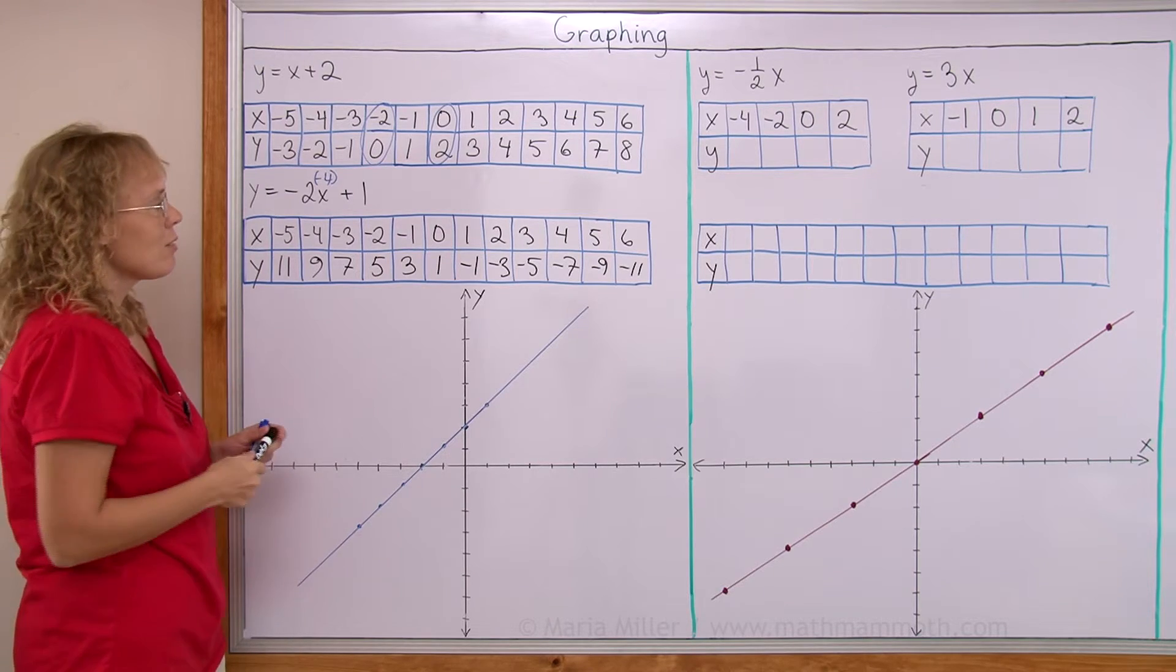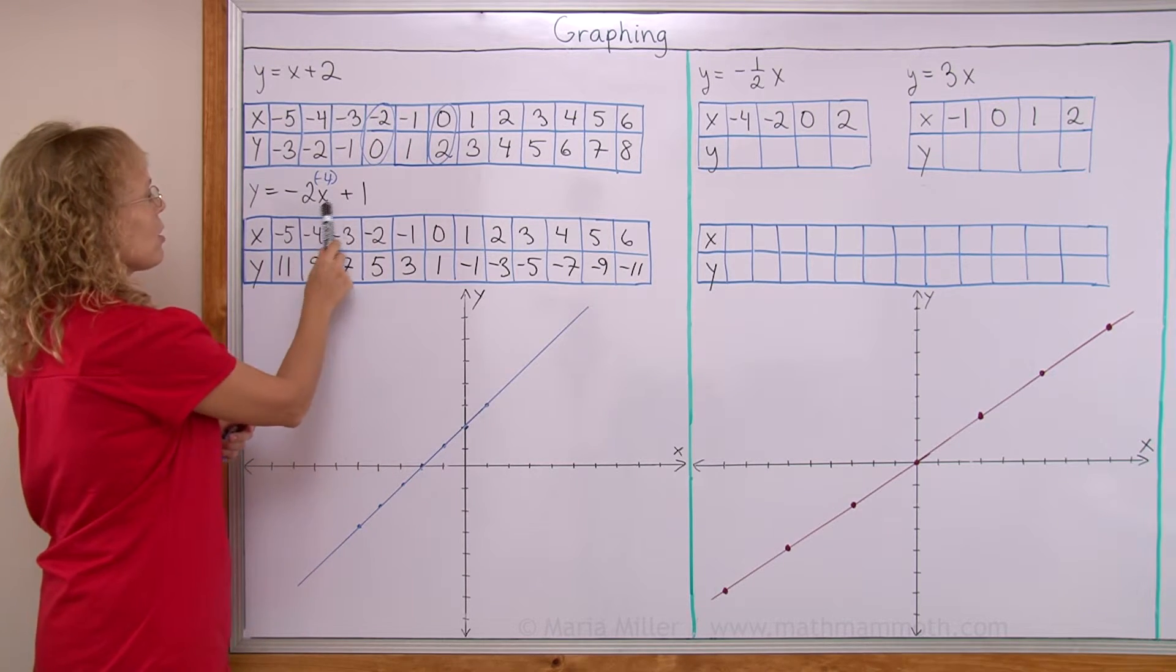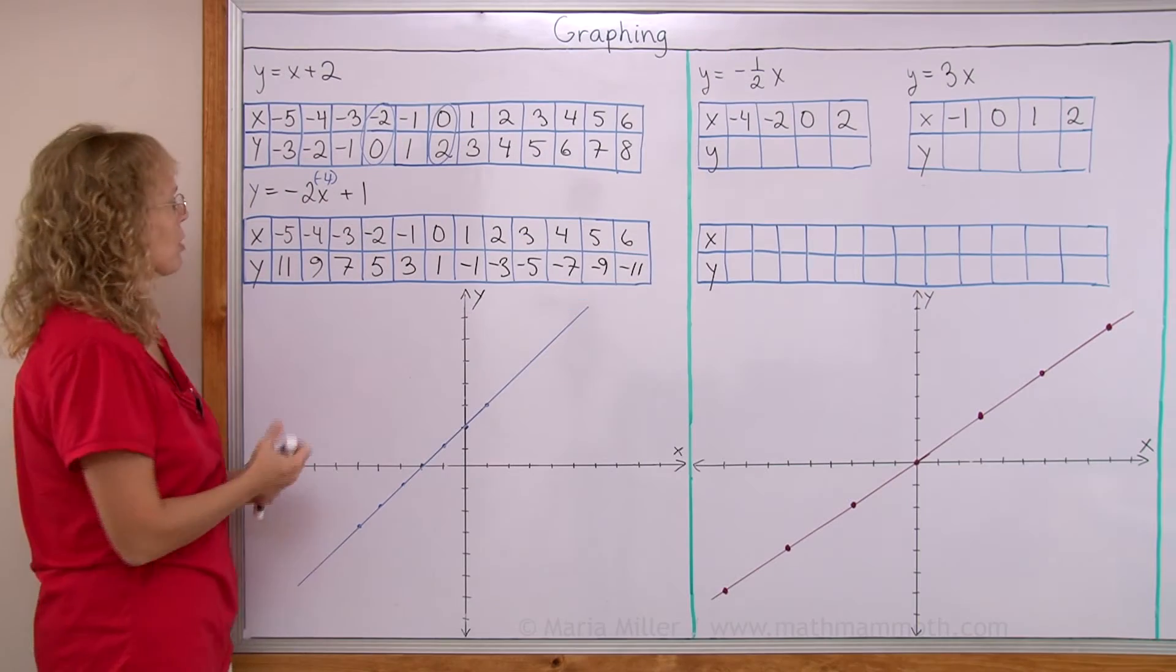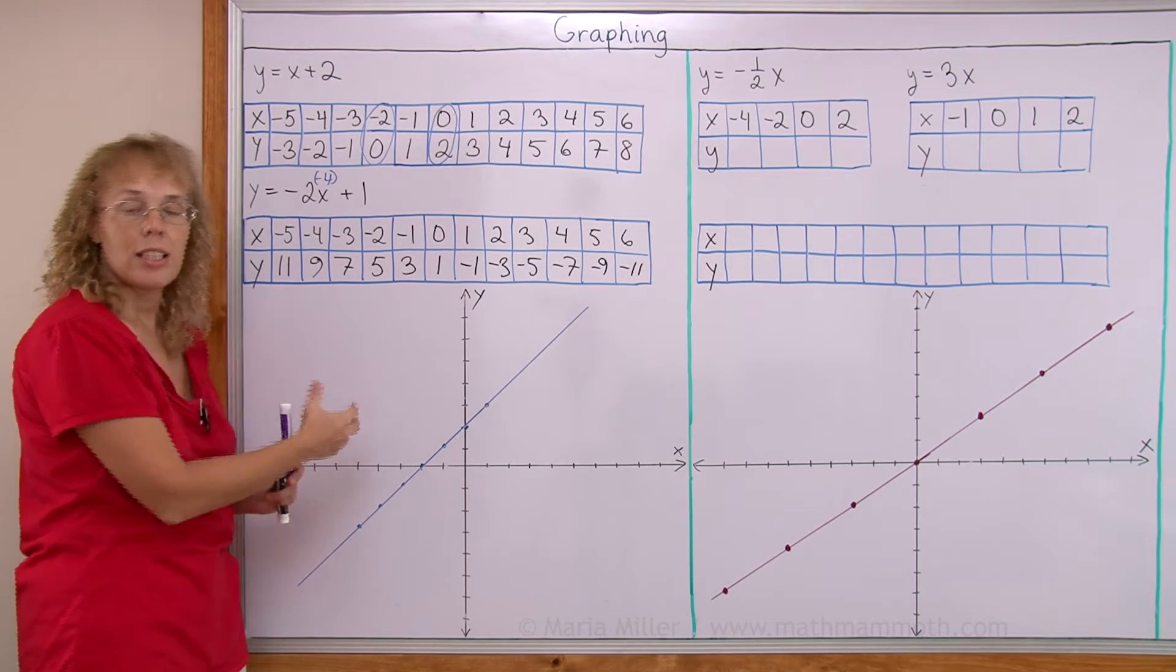And you can check, for example, for 0. This is the check. You get 0 plus 1 equals 1. Yeah? Matches. And now let's plot at least a few of these points and then draw the line.